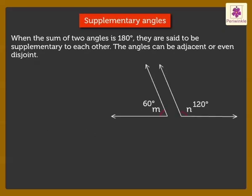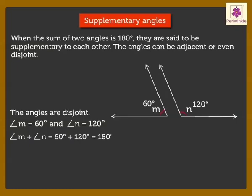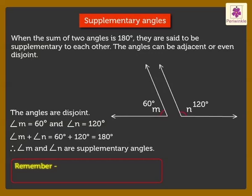Now look at figure 2 — here, the angles are disjoint. Angle M is equal to 60 degrees and Angle N is equal to 120 degrees. On adding the measures of Angle M and Angle N, we get the sum as 180 degrees. Hence, Angles M and N are supplementary angles. Kids, remember: to find the measure of a supplementary angle, we use the formula — Supplementary angle is equal to 180 degrees minus the given angle.